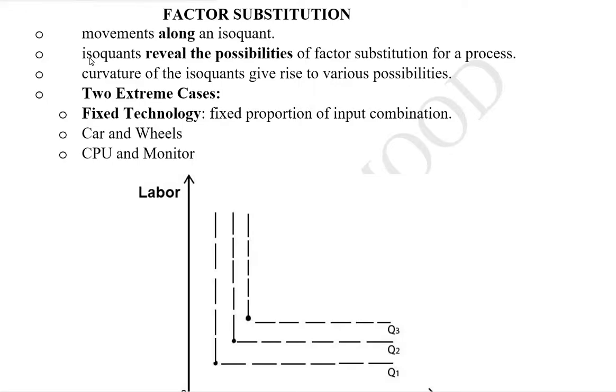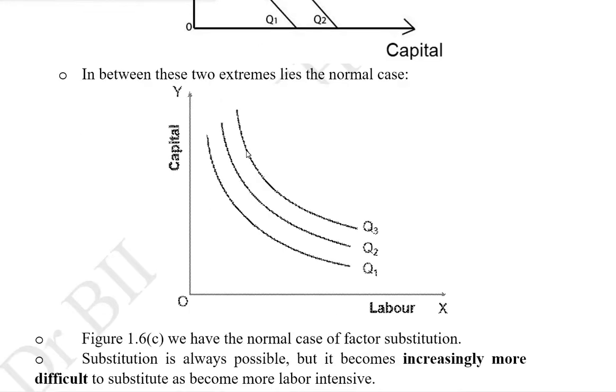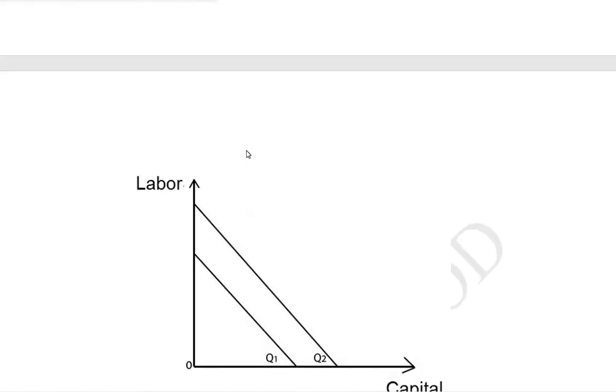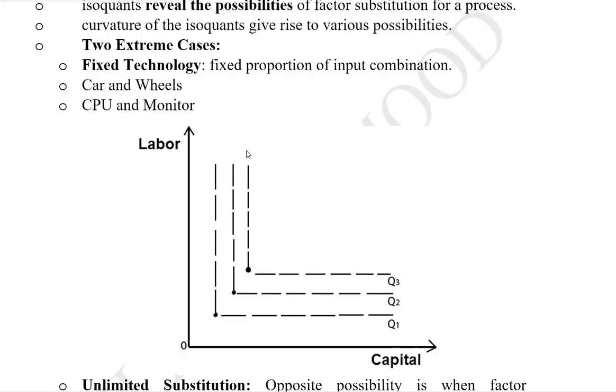In a production process, it is pertinent to know how far the factors are substitutable between each other when it comes to labor and capital, for instance. We shall see a couple of possibilities of factor substitution. We can also talk about the third one which is the usual one, but our focus would be on those possibilities that are the extreme possibilities.